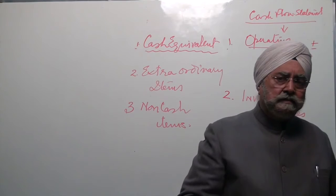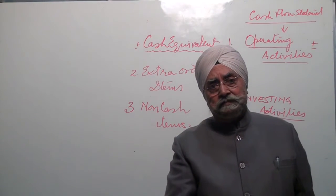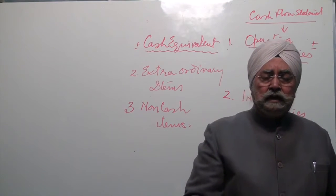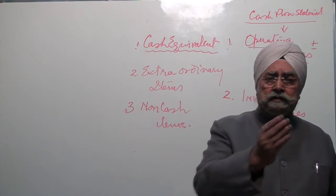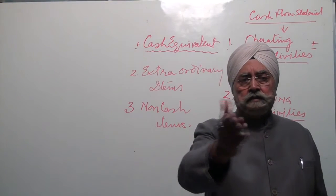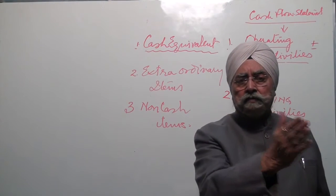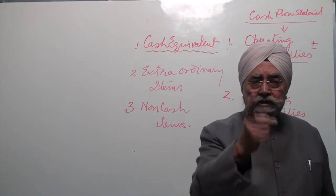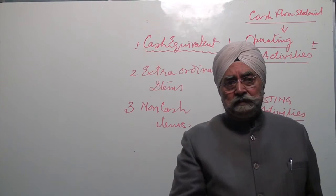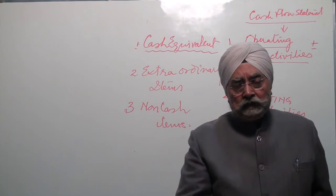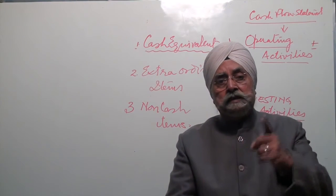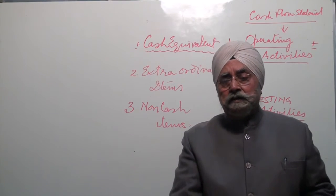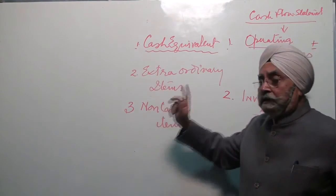Regarding bank overdraft — money overdrawn from the bank — there are two options. One is to treat it as negative cash: if positive cash is 10 lakhs and overdraft is 2 lakhs, deduct 2 lakhs so cash in hand is 8 lakhs. But the CBSE, my dear students, wants you to treat overdraft as a short-term loan — a current liability. So for examination purposes, bank overdraft is to be taken as a short-term loan.